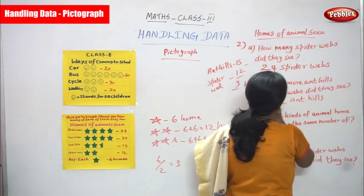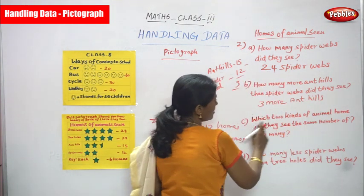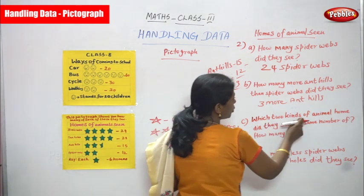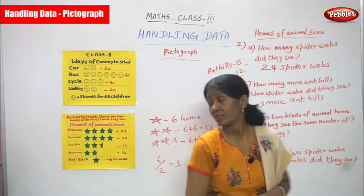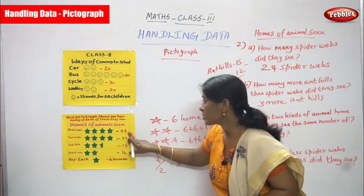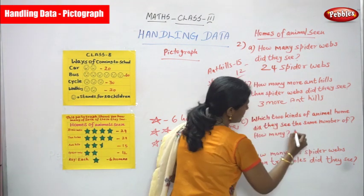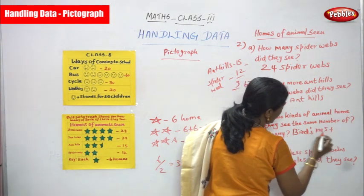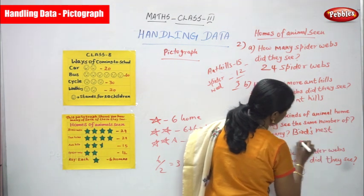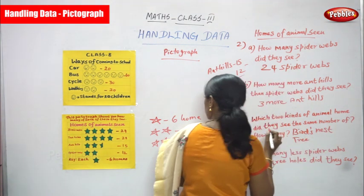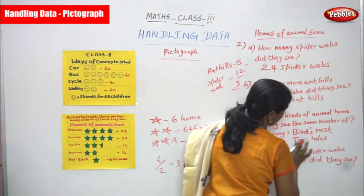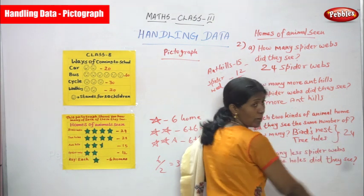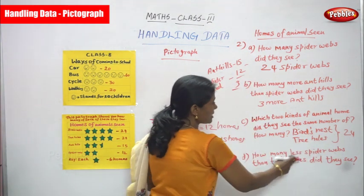Next question: which two kinds of animal homes did they see the same number of? Bird's nest is twenty-four and tree holes is also twenty-four. So the answer is bird's nest and tree holes — both are having twenty-four animal homes.